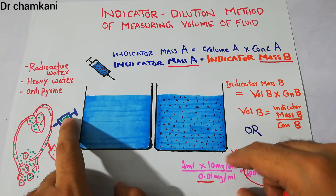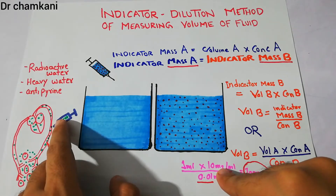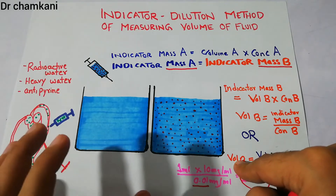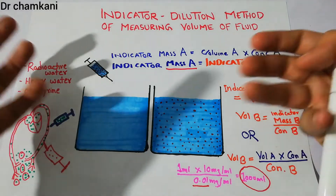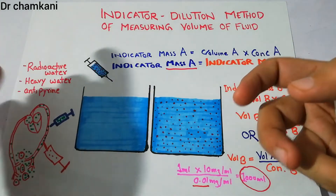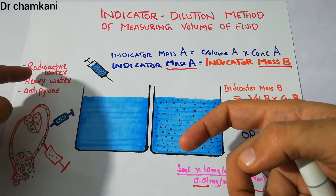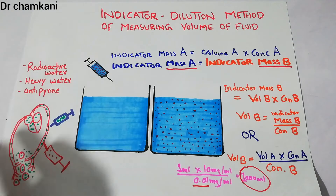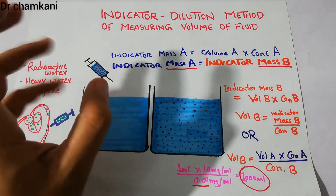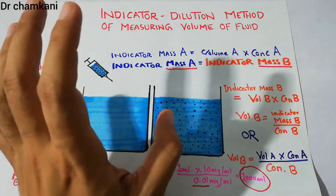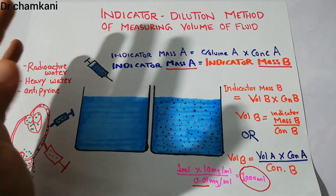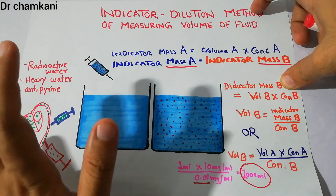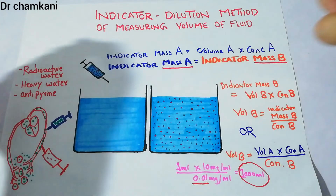For example, if the volume was 1 ml before injection and its concentration was 10 mg per ml, after injection the changed concentration is substituted into the equation to find the total volume of fluid in the human body. This method can be used to calculate all fluid compartments, but we need a special indicator. To calculate total body water, we must use radioactive water, heavy water, or antipyrine, because not every indicator has all the required properties — some will not properly dilute, some will get quickly metabolized, and some may have different concentrations in different compartments such as the intracellular, extracellular, interstitial, or plasma. The indicator must satisfy all terms and conditions before it can be used to calculate fluid volume.